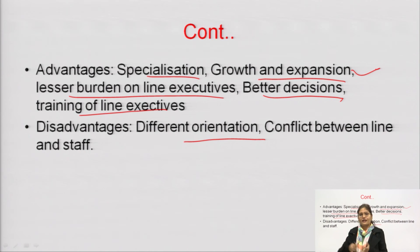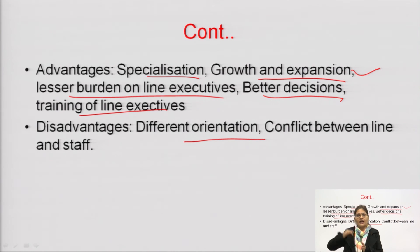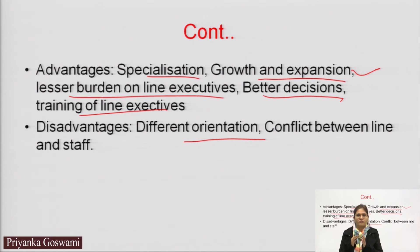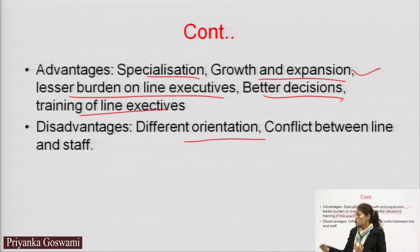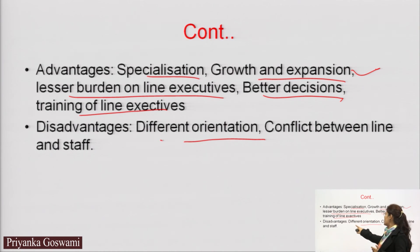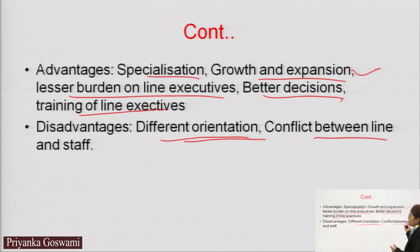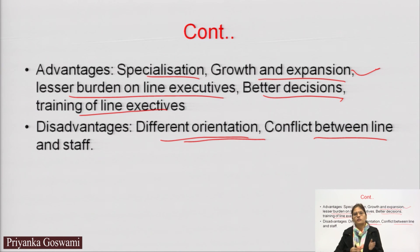Training of line executives: line executives get the opportunity to learn from staff officers about how to work in specialized areas. Disadvantages: different orientation — at a particular time, line executives and staff executives may not agree with each other, creating conflict. Conflicts between line and staff may arise in this type of organization.